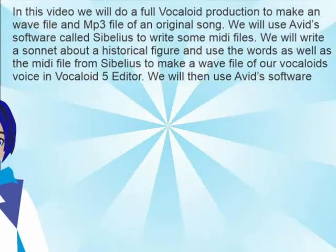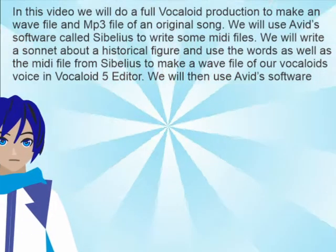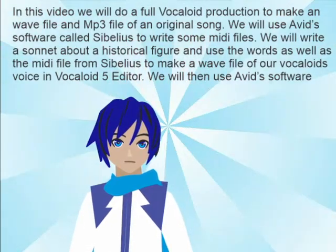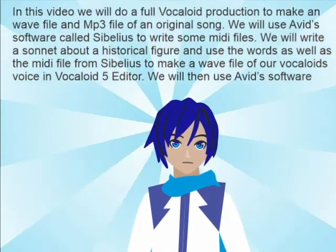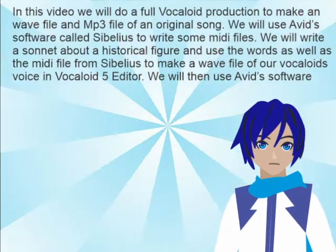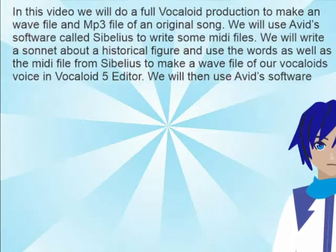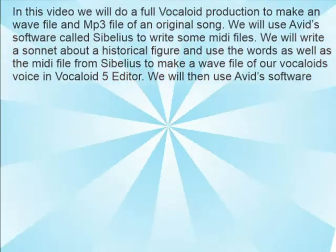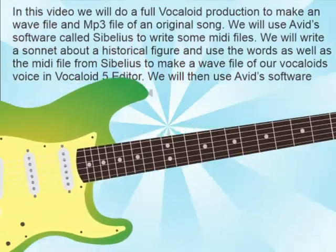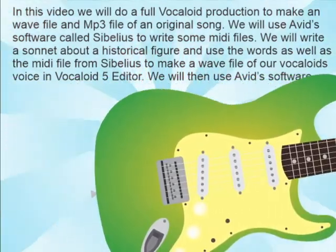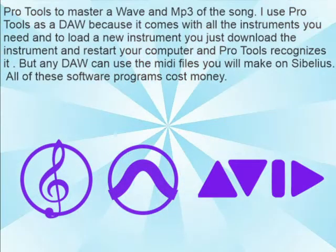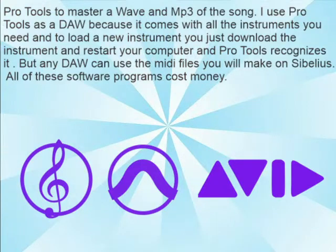In this video, we will do a full Vocaloid production to make a WAV file and MP3 file of an original song. We will use Avid's software Sibelius to write some files, write a sonnet about a historical figure, and use the words as well as the MIDI file from Sibelius to make a WAV file of our Vocaloid's voice in Vocaloid 5 editor. We will then use Avid's Pro Tools to master a WAV file and MP3 of the song.